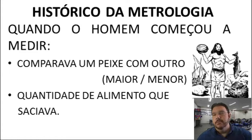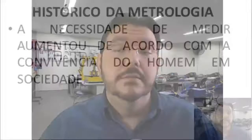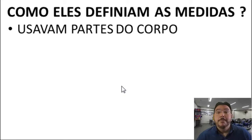A necessidade de medir foi aumentando de acordo com a convivência do homem em sociedade. Cada vez mais o homem precisou medir, e essa necessidade aumenta ainda nos dias de hoje. Como eles definiam essas medidas? Eles usavam partes do corpo, porque não havia instrumentos na época. As primeiras medições usavam, por exemplo, o comprimento do pé e a largura da mão.